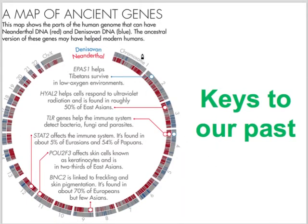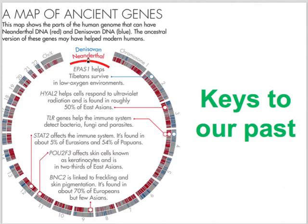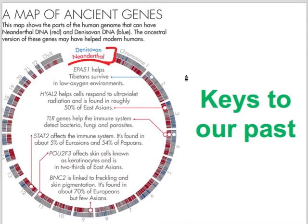Homo sapiens were not always the only bipedal hominid species. Two others existed around the same time as us: the Denisovans and the Neanderthals. Their genomes, although similar to ours, have certain specific differences — noted in blue for Denisovans and red for Neanderthals. Some of these regions were incorporated into our genome, confirmed only about ten years ago. This brought up a lot of interdisciplinary and philosophical ideas — parts of our genome are from Neanderthals, parts from Denisovans — and these differences are geographically specific.